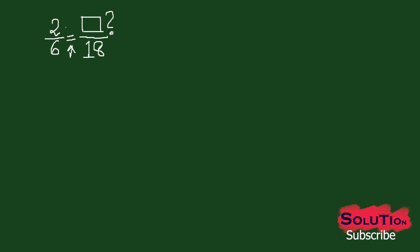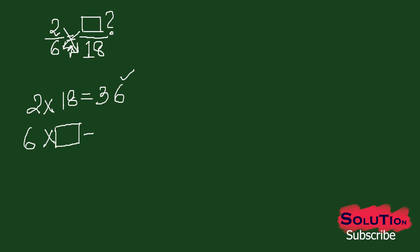If I cross multiply — that is, if I multiply 2 and 18 — I will get 36. If two fractions are equal or equivalent, then the numerator of one fraction multiplied by the denominator of the other fraction gives the same value as the denominator of the first fraction multiplied by the numerator of the other.